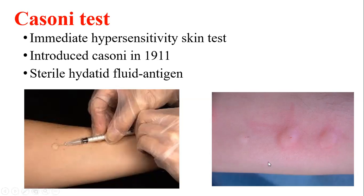The second arm serves as the control. For the control arm, sterile normal saline solution — also 0.2 ml — is injected into the left arm. So, 0.2 ml of hydatid antigen solution is given in the right arm (test), and 0.2 ml of normal saline is given in the left arm (control).